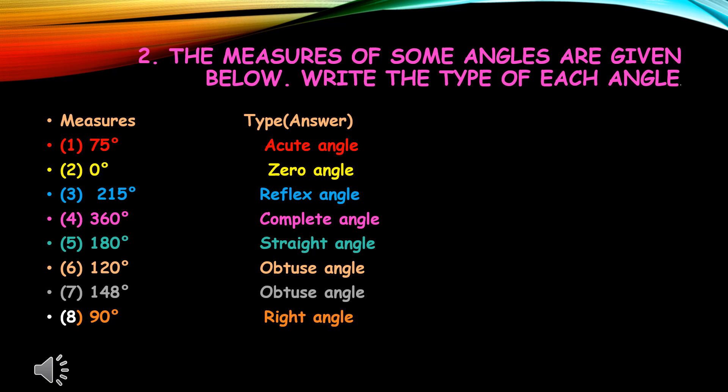215 degrees — any angle between 180 degrees and 360 degrees is called a reflex angle, so 215 degrees is called a reflex angle. Next, 180 degrees: we know that 180 degrees is called a straight angle — an angle with measure 180 degrees is called a straight angle.